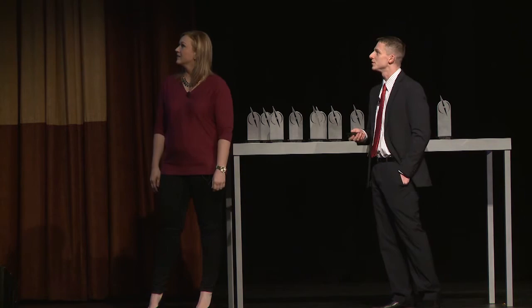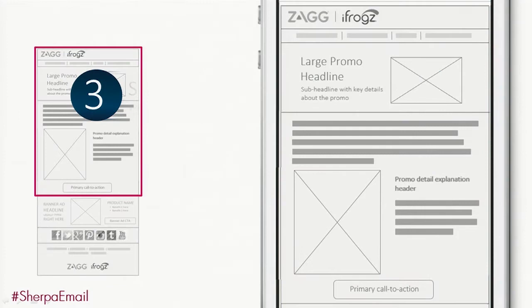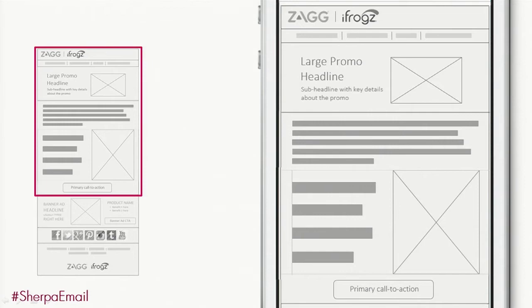Let's take a look at the third change. The third thing we did was to remove the explanation header, and we increased that text size and moved the image around a little bit. So let's see what this actually looks like. It seems like it's a little bit clearer.